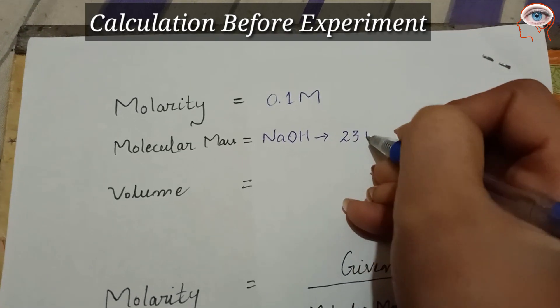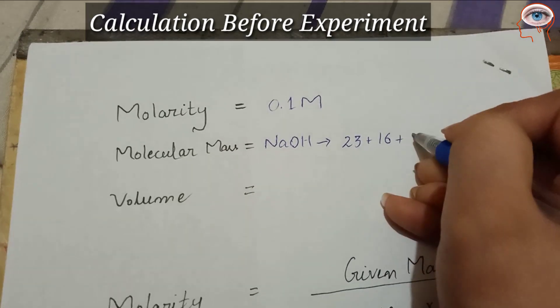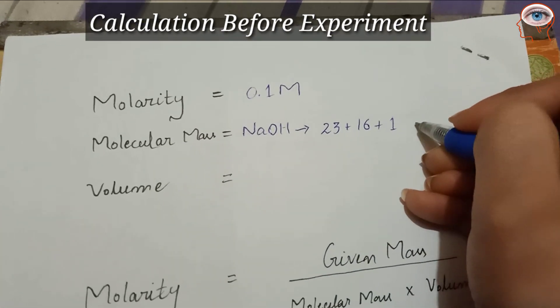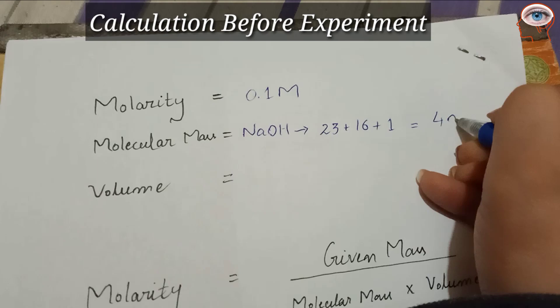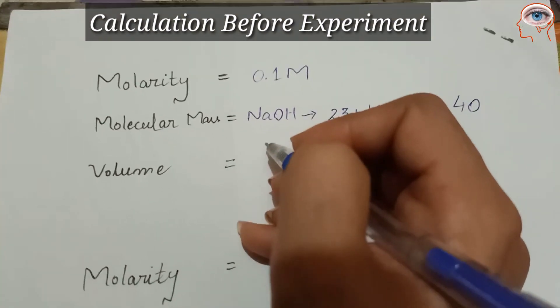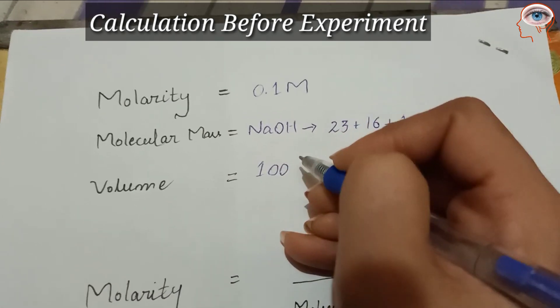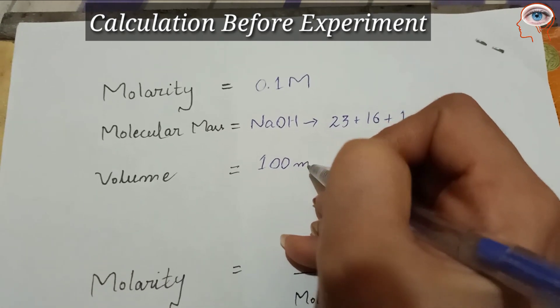Sodium is 23, oxygen is 16, and hydrogen is 1. Summing these up gives 40, which is the molecular mass of NaOH. Volume of the required solution will be 100 ml.